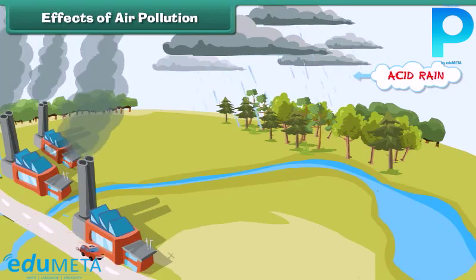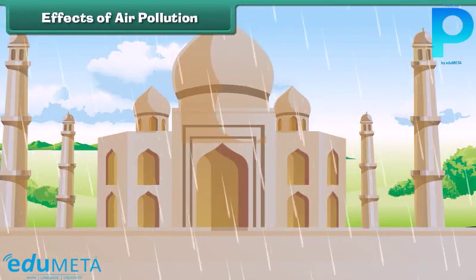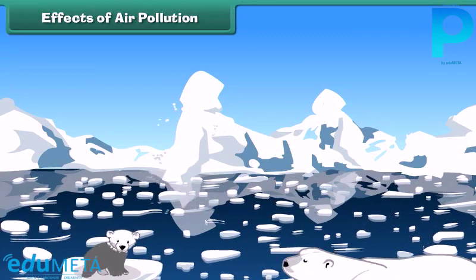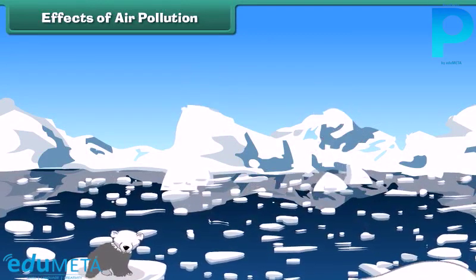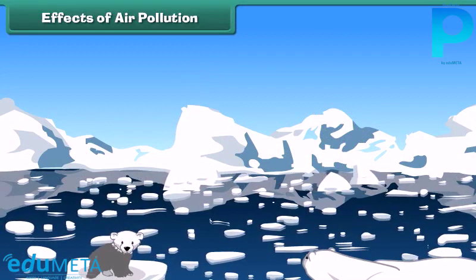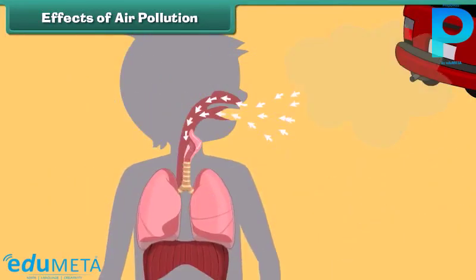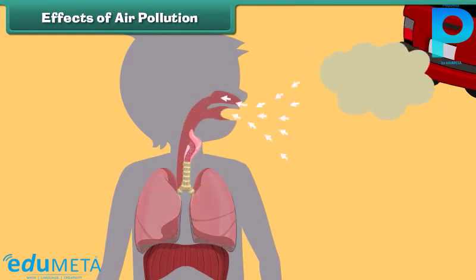Acid rain damages our buildings and monuments. Besides this, the large amount of carbon dioxide in air increases global temperatures, which subsequently results in the melting of glaciers. It also adversely affects our lungs and we suffer from respiratory disorders.